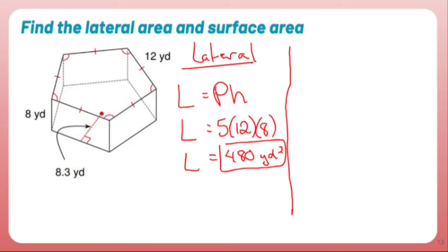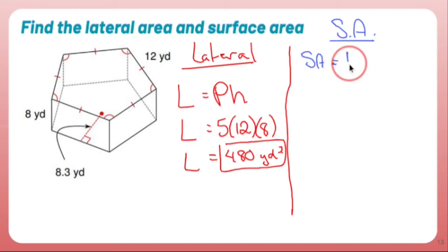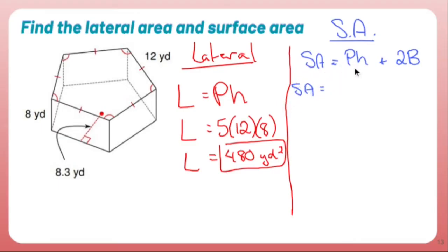What's not as fun is the surface area. For any prism, your surface area is going to be your lateral area — which is nice because I can just use that — plus two times the area of the base. So far, not so bad. My lateral area, perimeter of the base times the height, was 480.